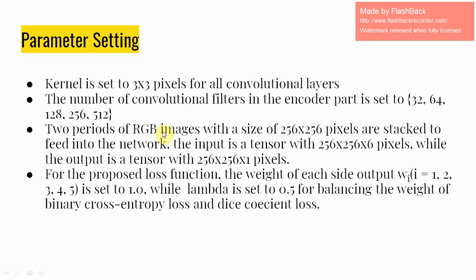The convolutional kernel size is set to 3×3 for all convolutional layers. The number of convolutional filters in the encoder part is set to 32, 64, 128, 256, and 512. Two temporal RGB images of size 256×256 pixels are stacked together as input to the network, making the input tensor 256×256×6, while the output tensor is 256×256×1. The weight of each side output Wi is set to 1, while lambda is set to 0.5 to balance the binary cross-entropy loss and DICE coefficient loss.